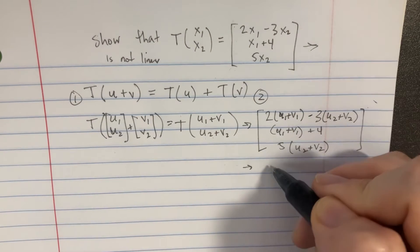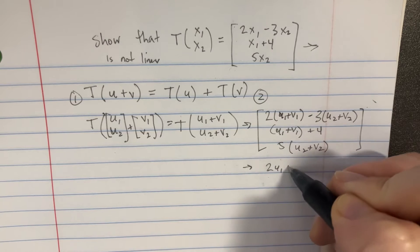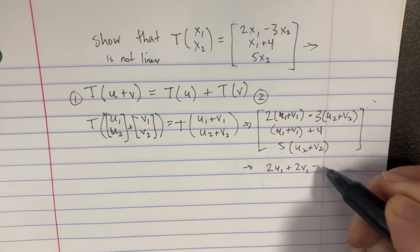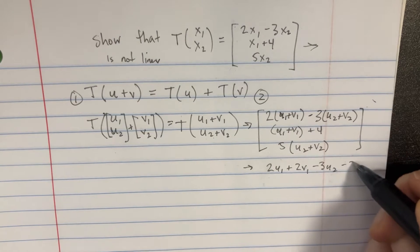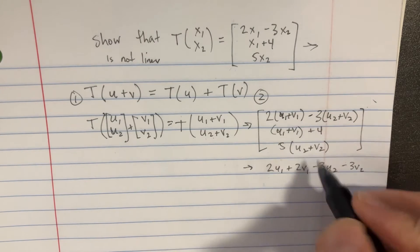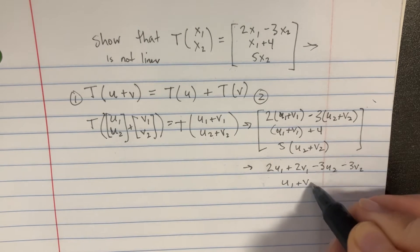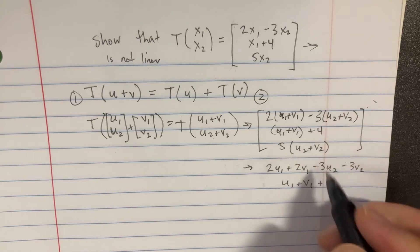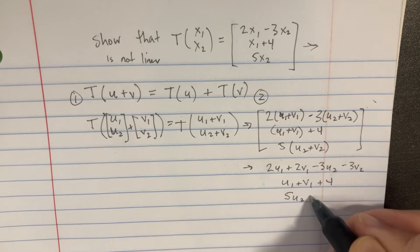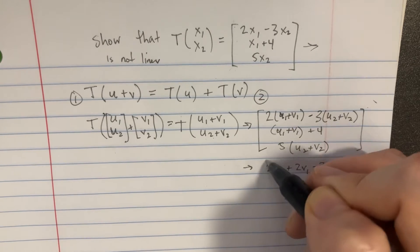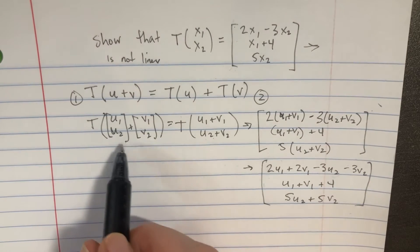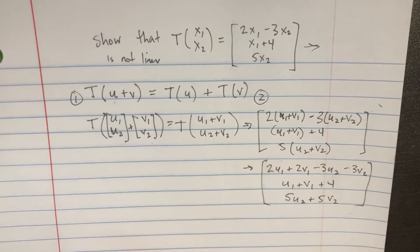Let's try to simplify this a little bit, so it'll just become two U1 plus two V1 minus three U2 minus three V2 on top. Over here we have U1 plus V1 plus four, and then five U2 plus five V2. So this becomes essentially the transformation that happens when we do this first half.